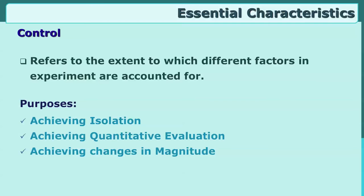Another purpose of control is achieving quantitative evaluation — experimental design produces scores. The third purpose is achieving changes in magnitude. Magnitude has both distance and direction: are the changes increasing or decreasing something? In our examples, we want to increase reading comprehension but decrease disruptive behaviour. There is a direction involved, and that is why control over various factors is essential.